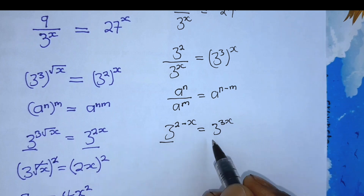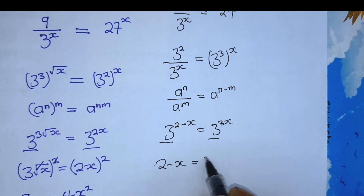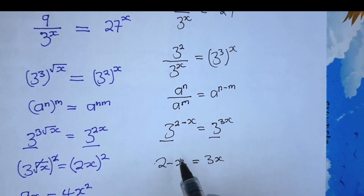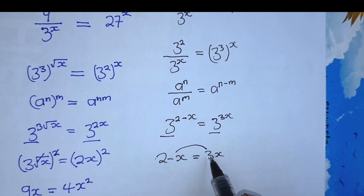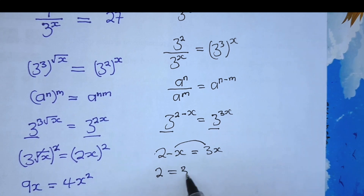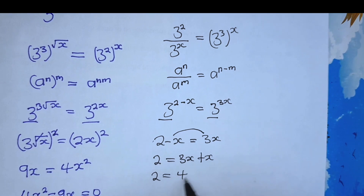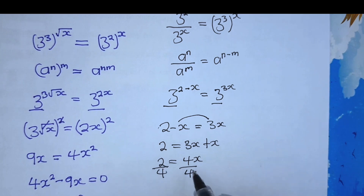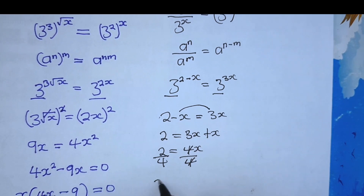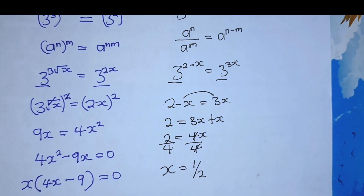Since we have the same base, we can equate the exponents: 2 minus x equals 3x. Rearranging, if the negative x moves across the equality sign it becomes positive, so 2 equals 3x plus x, which gives 2 equals 4x. Dividing both sides by 4, the 4s cancel and therefore x equals 1 over 2. This is the final solution. Thank you for watching — don't forget to subscribe to the channel for more related videos.